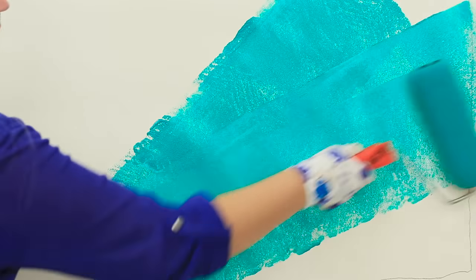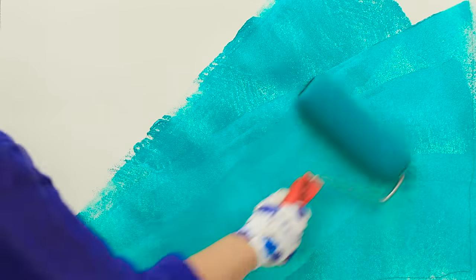And now paint the wall all one color with a roller. We choose a rich turquoise shade. Touch the fresh layer of paint with a broom.